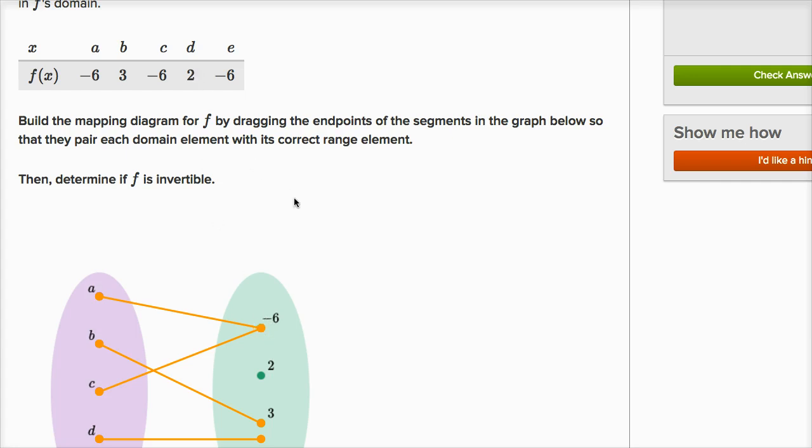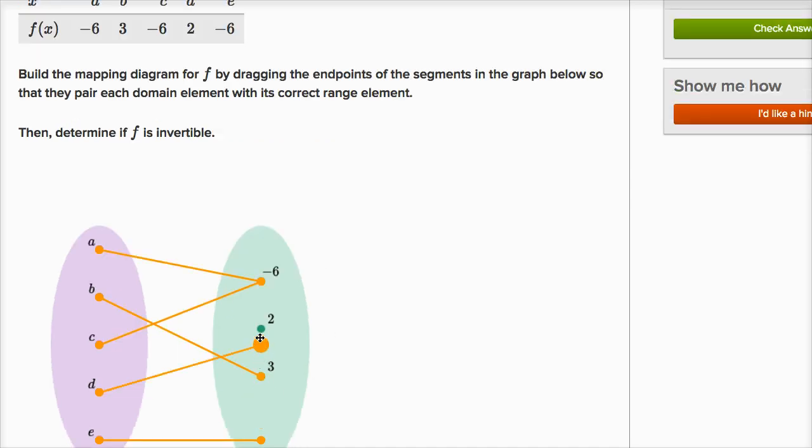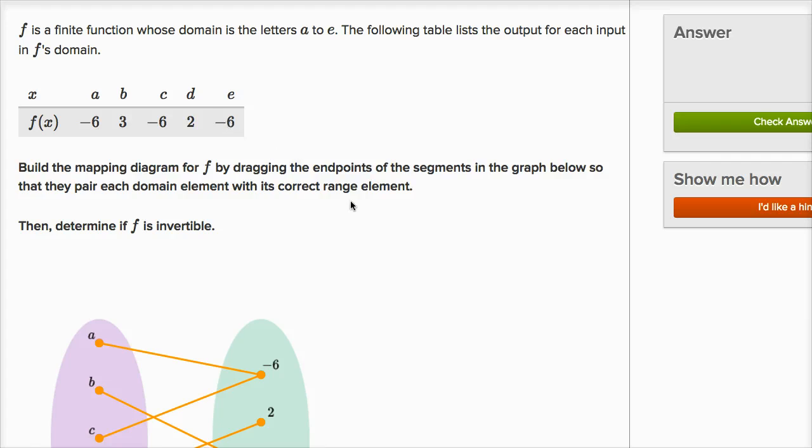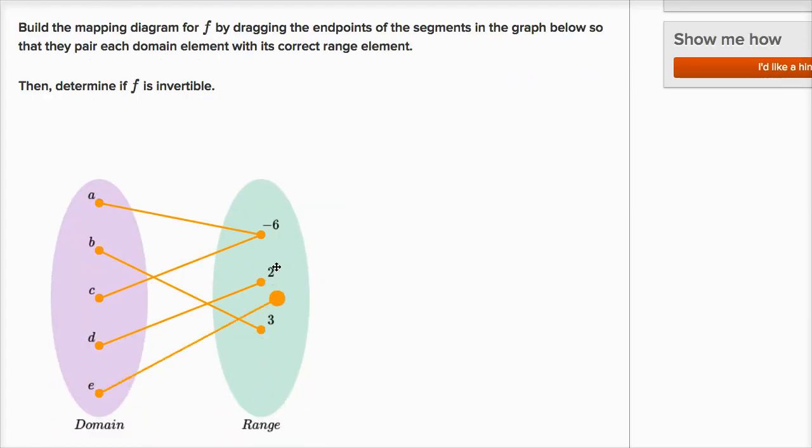So let's see, D points to two, or maps to two. So you input D into our function, you're going to output two. And then finally, E maps to negative six as well. That's a visualization of how this function F maps from A through E to members of the range.